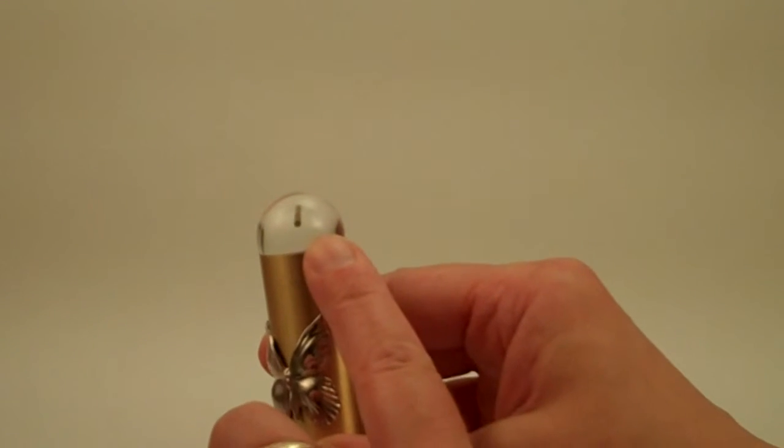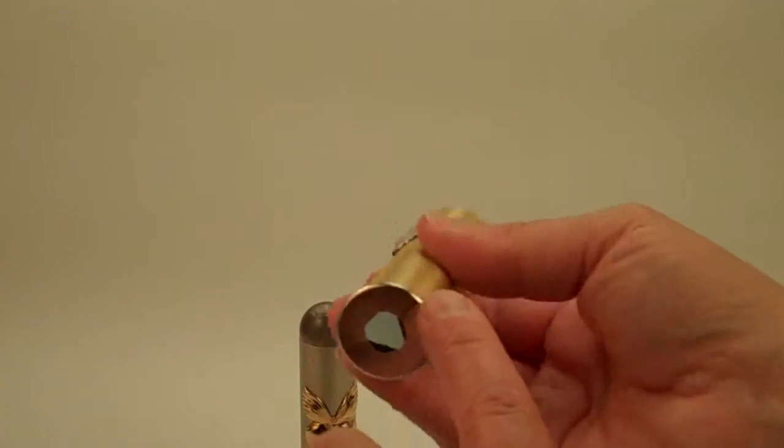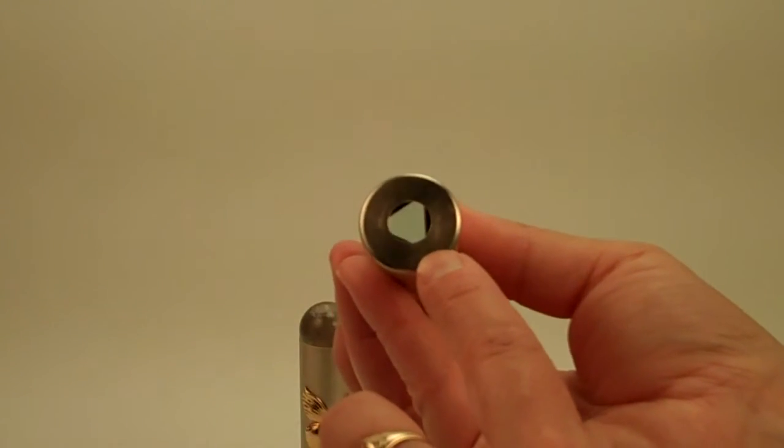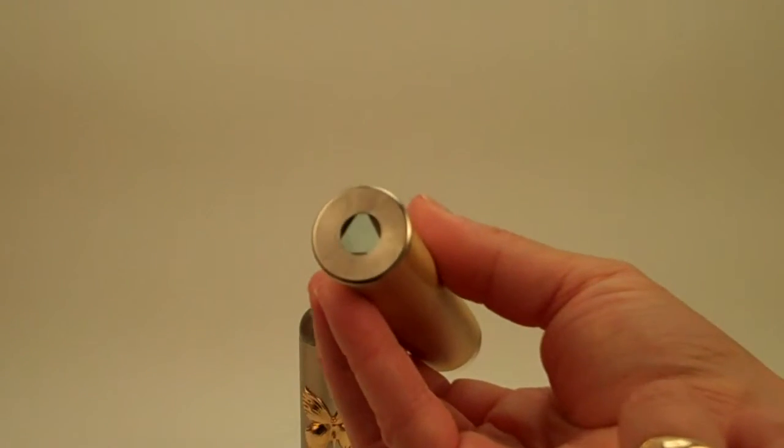The clear marble will distort the colors of what you see, and then the mirrors of the telidoscope will multiply and turn the images as you look through it.